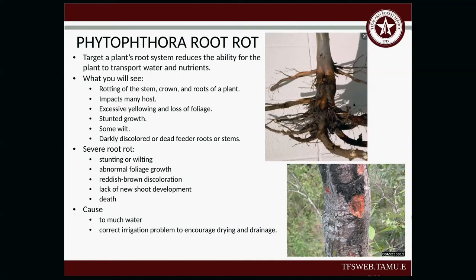Phytophthora root rot — this targets the plant's root system and its ability to transport water and nutrients. You'll see rotting of the stem crown and root of the plant. It impacts many hosts — you'll see excessive yellowing and loss of foliage, stunted growth, wilt, and darkly discolored or dead feeder roots or stems. With severe root rot, you'll see stunting or wilting, abnormal foliage growth, and reddish-brown discoloration. It can cause death of the tree. The cause is too much water — correct the irrigation problem. Yes, we're in a drought and you need to water your trees, but there comes a point when the water is too much and can cause more damage.